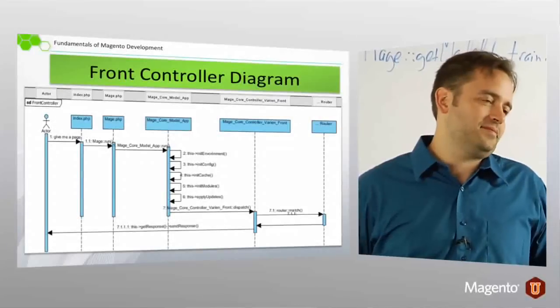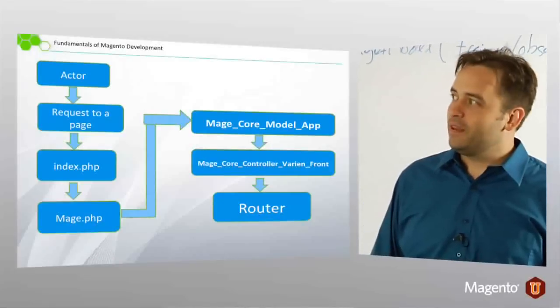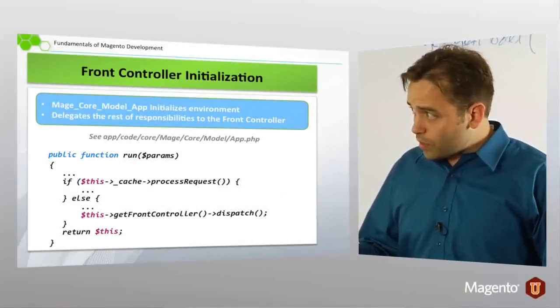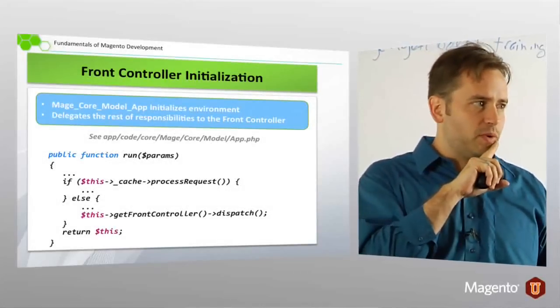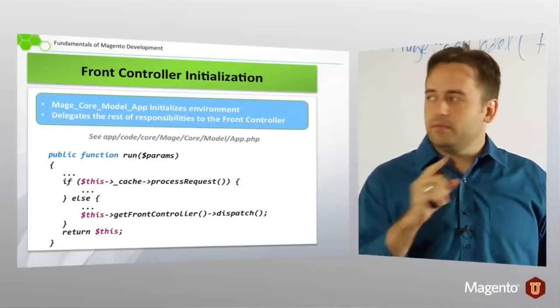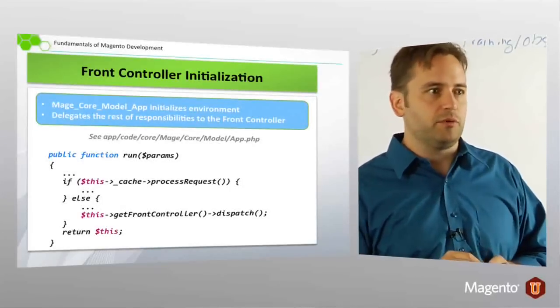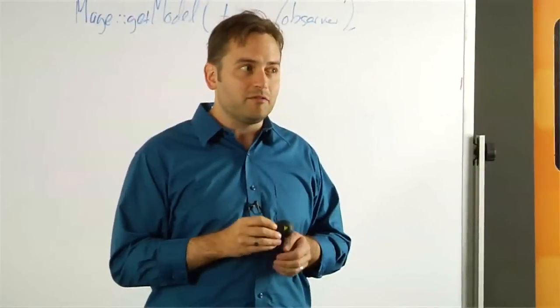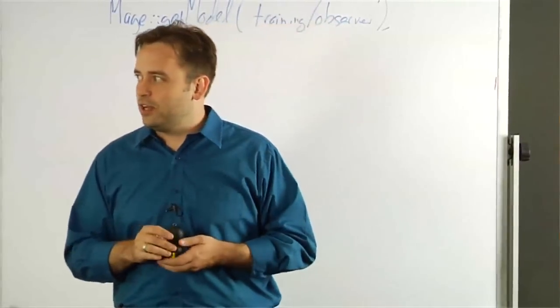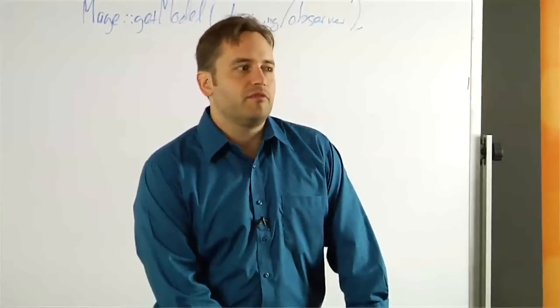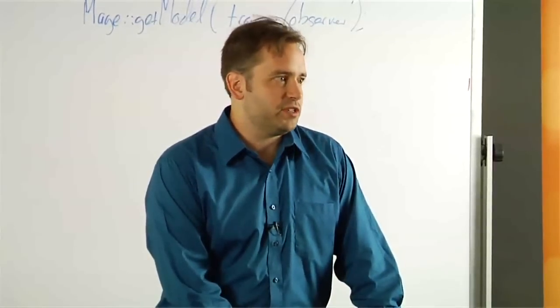So, it's about as deep as we go. Here is another diagram of exactly what I just said. So, front controller initialization, this is in Mage core model app. Things to notice here and run are this process request. This is full page caching in enterprise. So, basically if this method returns something at all, then we don't kick off the routing. We just simply return the content that we have cached. That's why full page caching is so fast. Because the availability of a cached instance of a page is determined very early on in the application initialization.